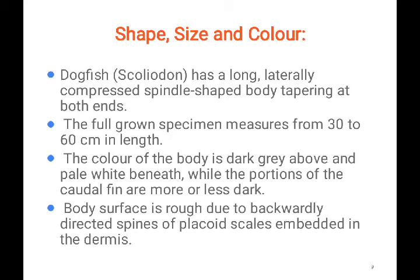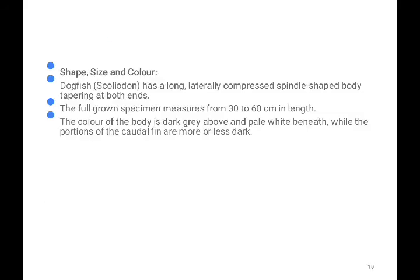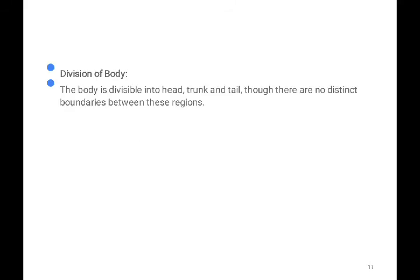When viewed from the surface of the water, the dark coloration serves as camouflage, helping the shark hide from predators as well as concealing it from its prey. From above, the dark gray color looks like a stone or something similar, and from beneath the white background also provides camouflage. Their color is very helpful for survival and enhances their predatory activity. The body surface is rough due to backwardly directed spines of the placoid scales, which are embedded in the dermis.